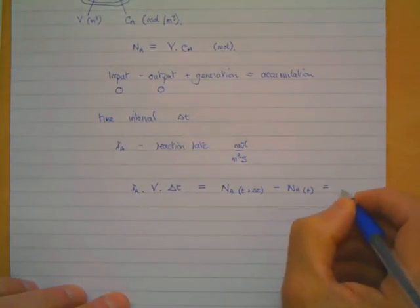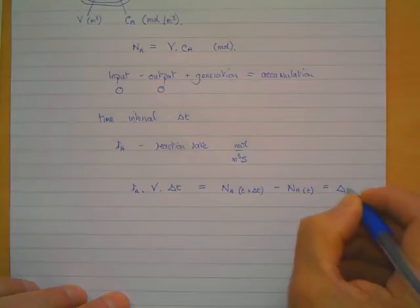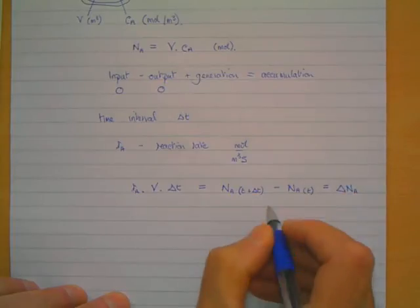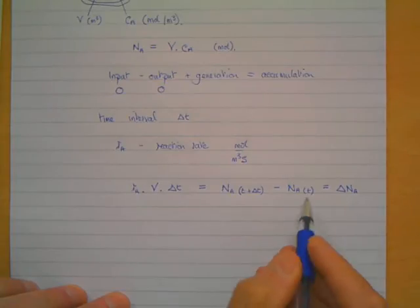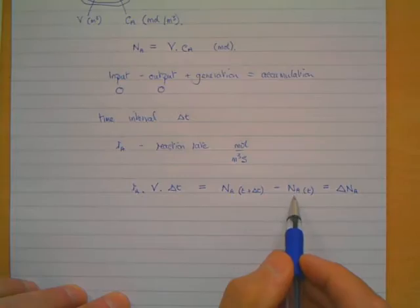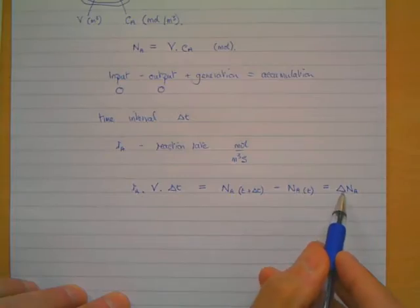That is delta NA over that time period. So that's the difference between NA at the start of the time period and the number of moles at the end of the time period, so that's delta NA, the number of moles that have disappeared during that time interval.